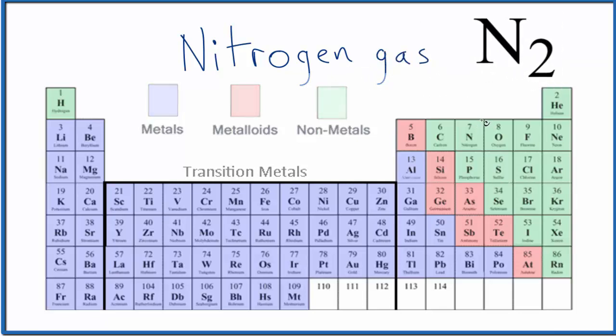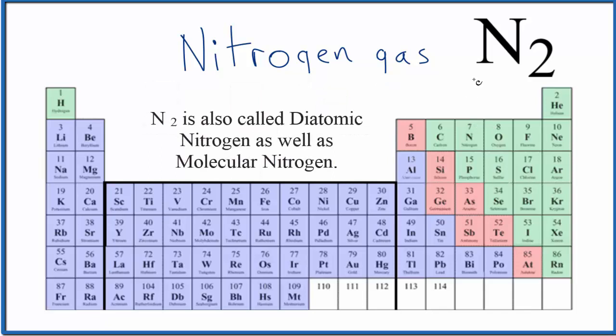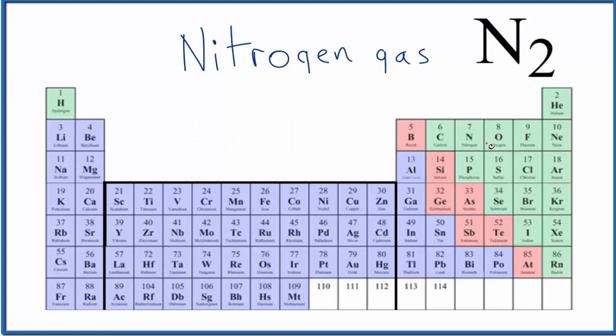We should also note that sometimes it's called diatomic nitrogen, because there are two nitrogen atoms bonded together, and molecular nitrogen. Since this is a molecule, we have two nitrogen atoms bonded together. There are seven other diatomic gases you should be aware of, and they're listed here.